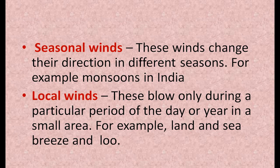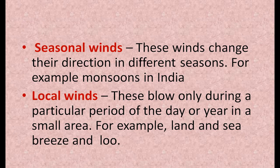Local winds blow only during a particular period of the day or year in a small area. For example, the hot winds in summer that blow only in the northern parts of India — especially Punjab, Haryana, and Rajasthan — are known as 'loo'. Land breeze and sea breeze are also examples of local winds.